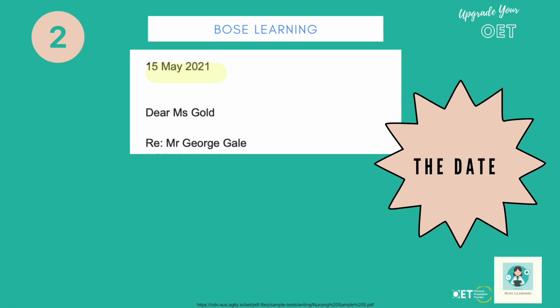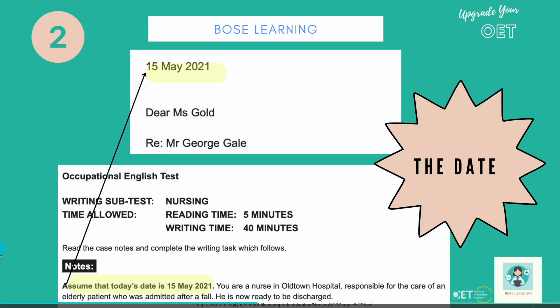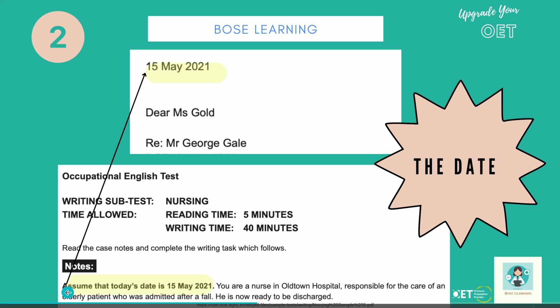Number two is the date. The date is given to you, so it will never be the date you're actually doing the exam on. They always tell you to assume that today's date is a certain date, and it will always be a date in the past. Just copy it down exactly. Don't try and change it to numerical form — don't write 150521. Just copy it exactly.